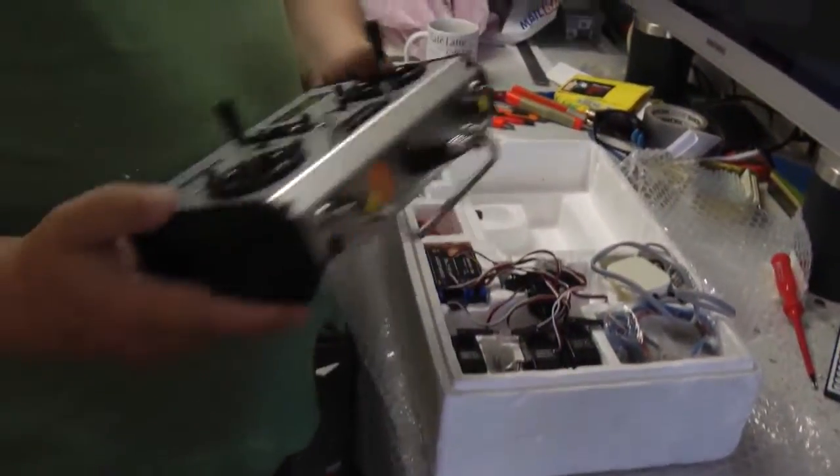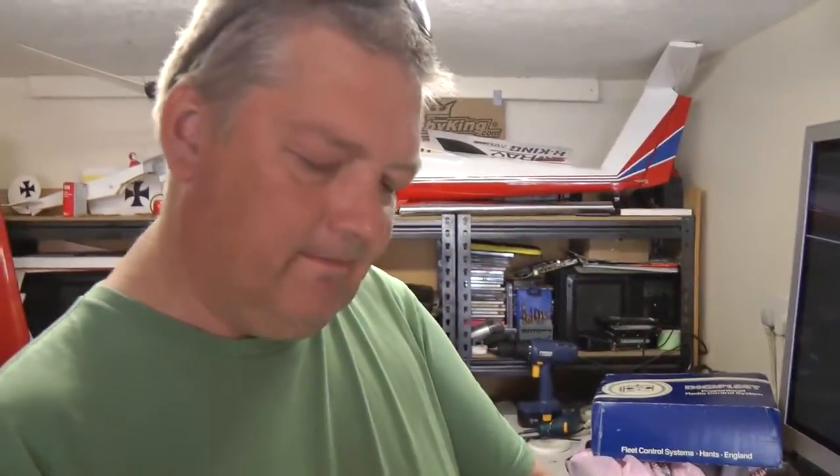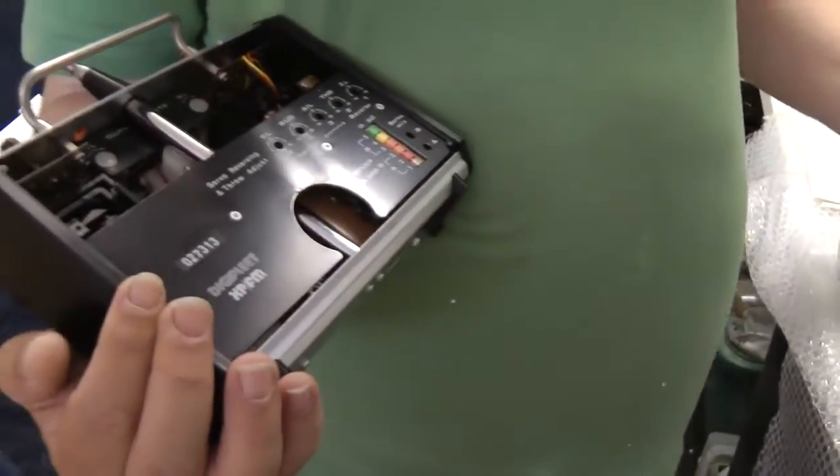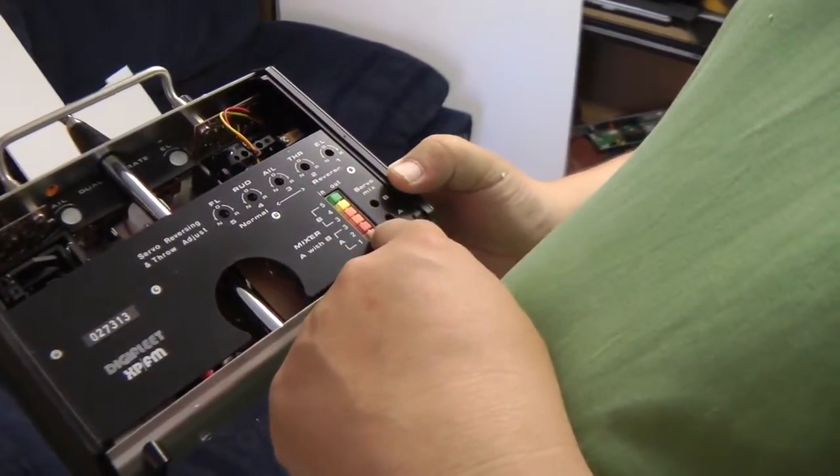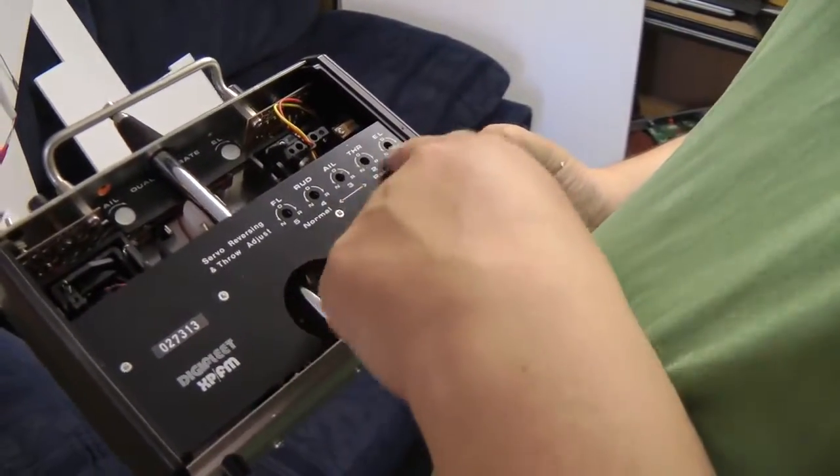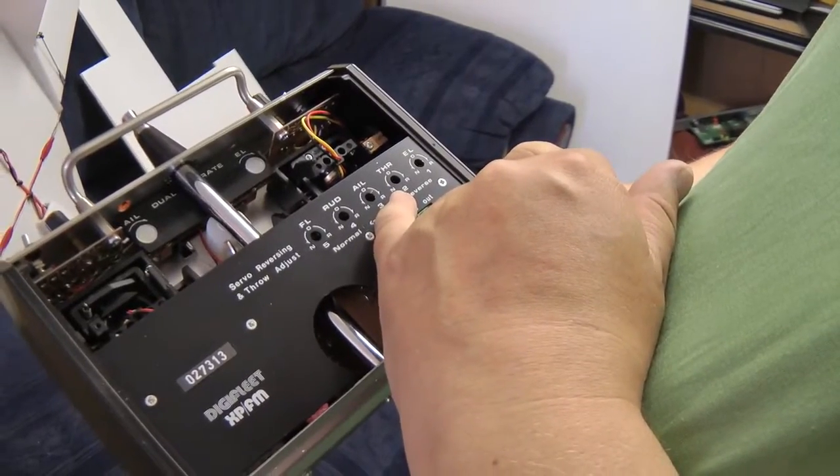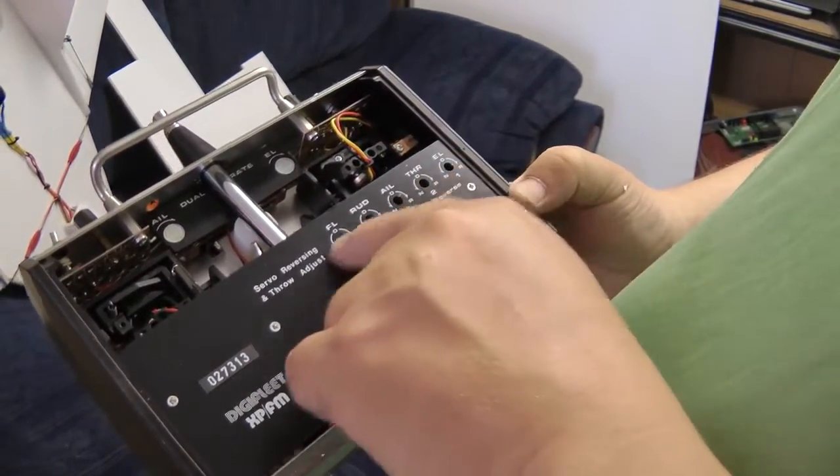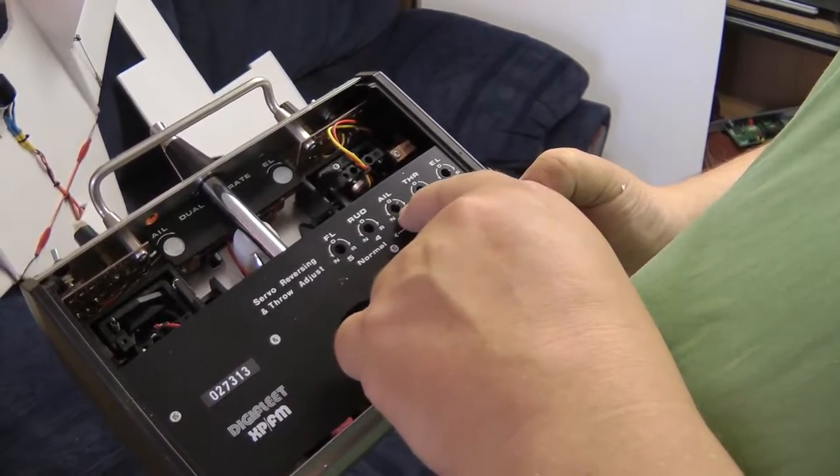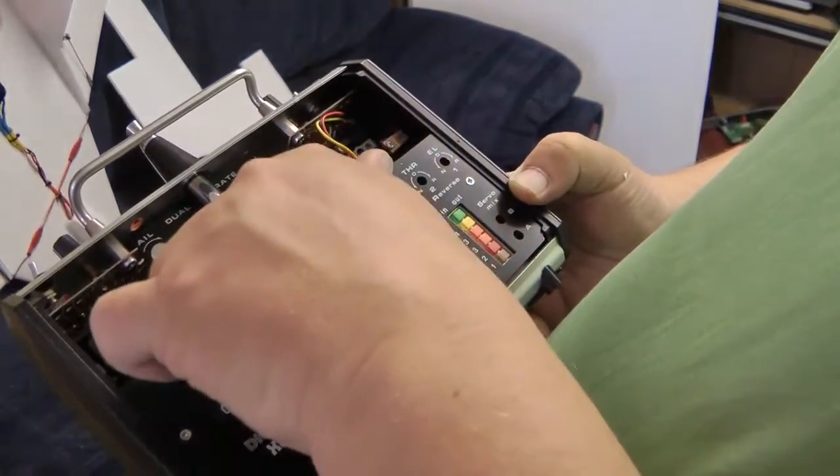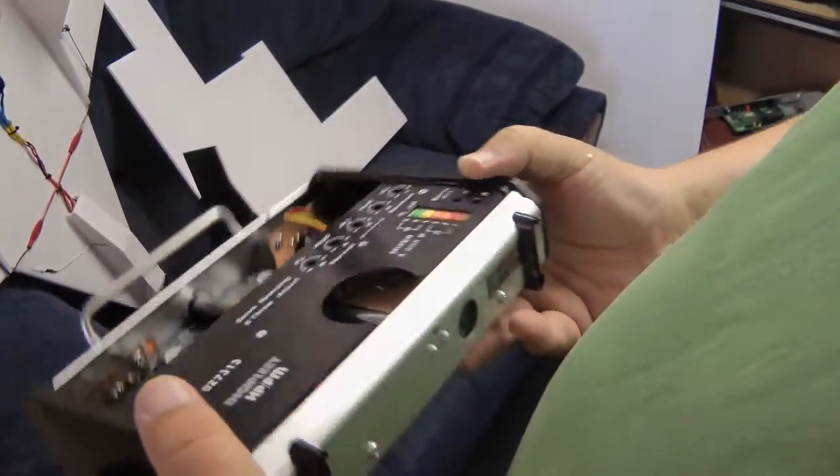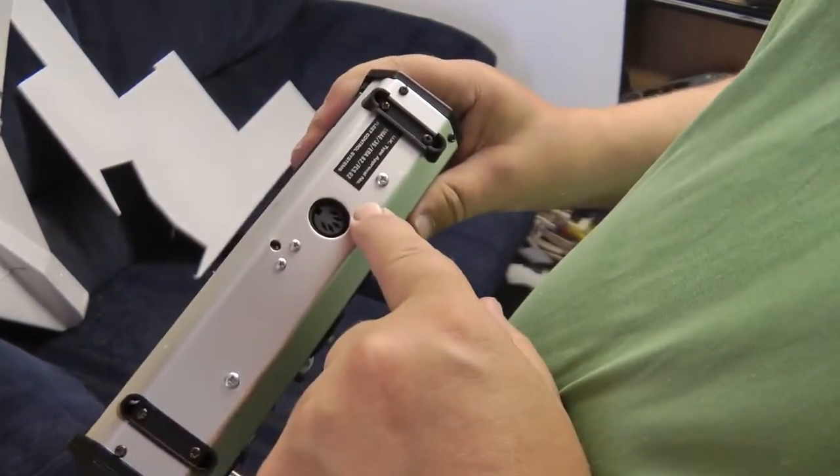Very well built. Now to configure this, as you can see there's no display, but what you've got is some mixer switches, a little bit of mixing, and you can set your servo end limits using these pots and you can also reverse them as well. Got dual rate up here as well you can adjust.